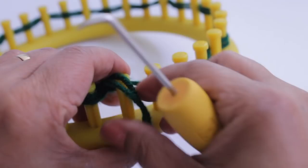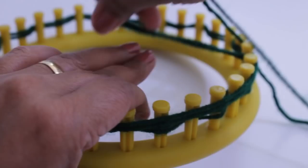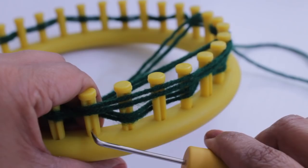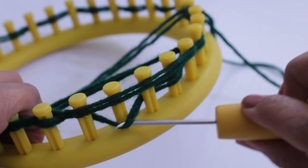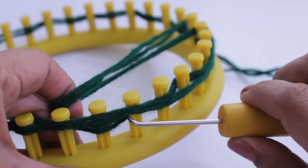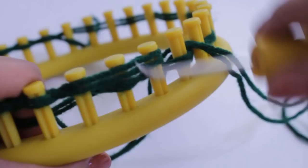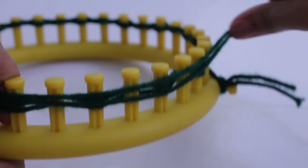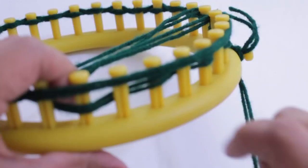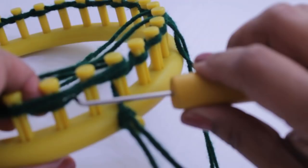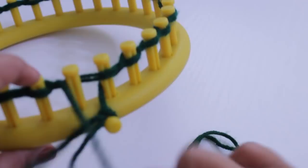So you lay the yarn again over a few of your pegs. And again, knit off every peg that has two loops. And then just keep going until you finish the whole loom. When you get to peg 31, you'll notice that peg 31 does not have two loops. And so you will not be knitting peg 31.